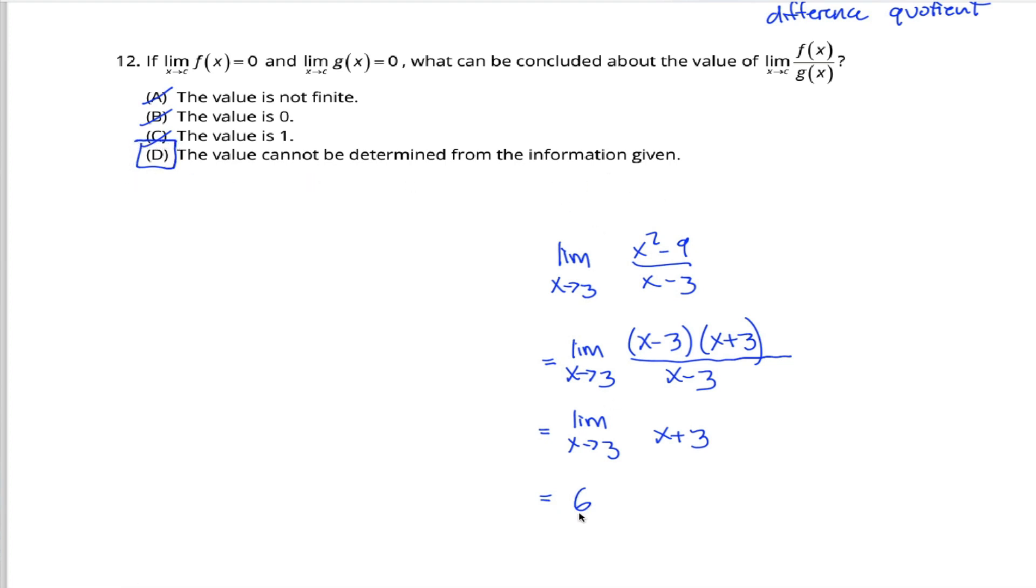Not to say we can't figure out the 6, just saying that the limit as x approaches c of f of x over g of x is not always equal to 6.